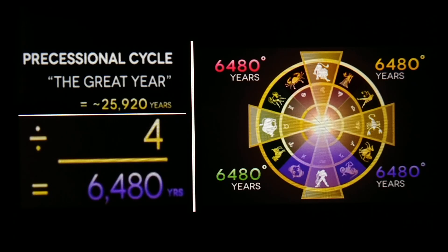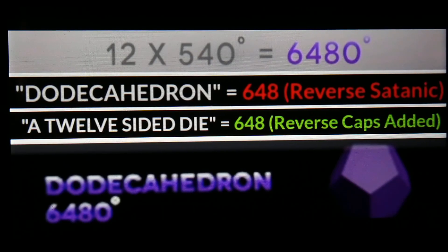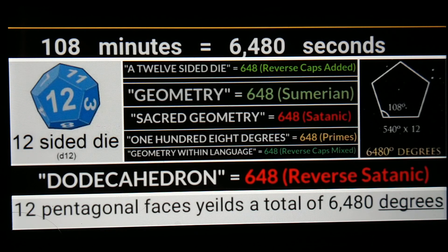We talked about the precessional cycle of the great year. He divided the great year into four segments — four seasons — each 6,480. He compared that with the dodecahedron, where each face is a regular pentagon. The pentagon is made of five angles, each 108 degrees. He pointed out that 108 minutes is equal to 6,480 seconds.